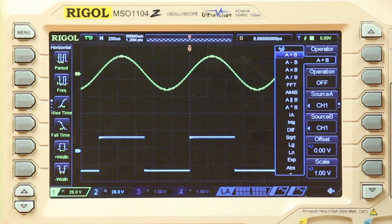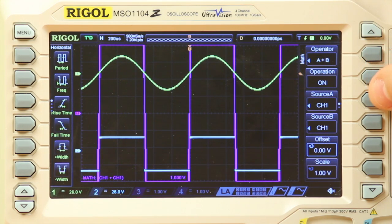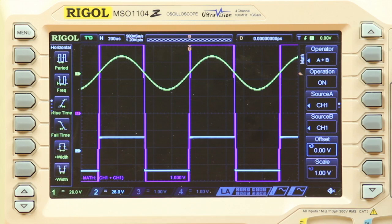I'm going to start off with just doing addition, and then from here I'm going to turn on the operator. Right now it's just adding channel 1 plus channel 1, shown here for our two different sources.